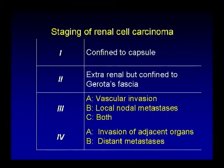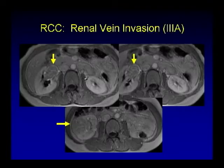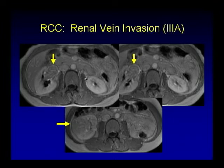On oral boards, it's not enough to stop when you identify a renal cell carcinoma — always look for other findings so you can give proper staging. Here's an example: a T1-weighted post-gadolinium image demonstrating a solid enhancing renal cell carcinoma on the right, and you notice the tumor thrombus expanding the right renal vein. Renal cell carcinoma with renal vein invasion — stage 3a.